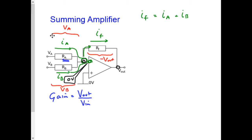If I write out my resistor equation, I get I equals V over R, and therefore for each of my input currents and output currents, I get IF equals minus Vout over RF, IA equals VA over RA, IB equals VB over RB.